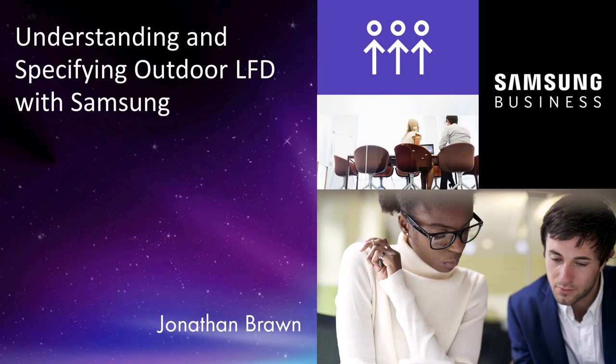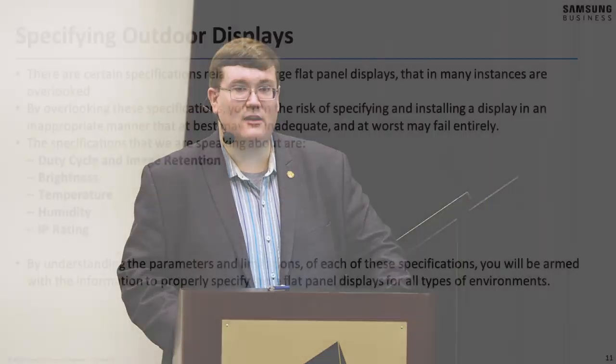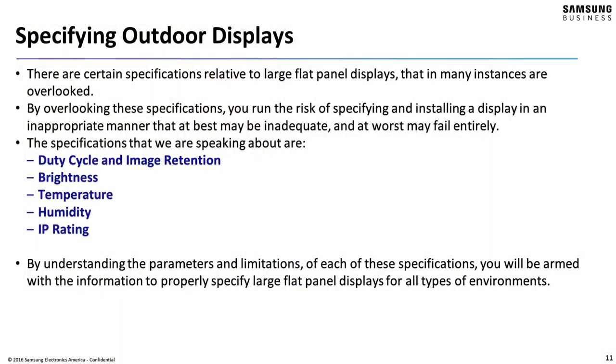Hello, and welcome to Understanding and Specifying Outdoor Displays. This is the second segment of our presentation where we're going to discuss the specifications — such as brightness and IP ratings — that make outdoor LCDs different. There are five factors we have to talk about: duty cycle and image retention, brightness, temperature, moisture and humidity, and IP rating. These are terms you're going to see on spec sheets for outdoor panels when you are selecting one and need to make sure you've got the right one for your application.